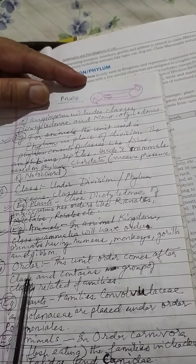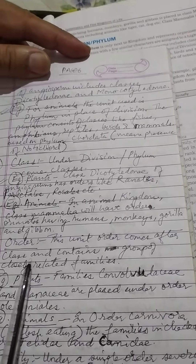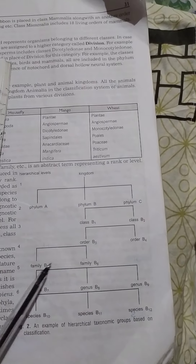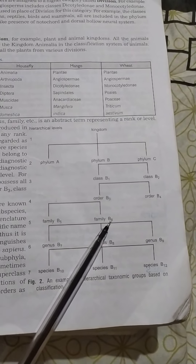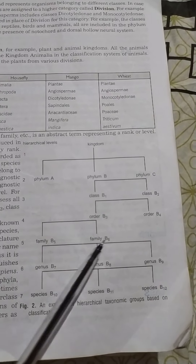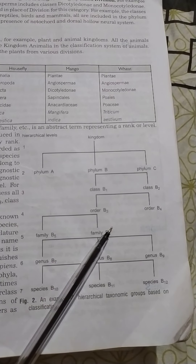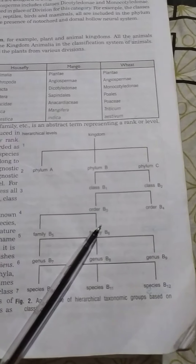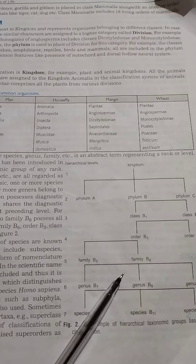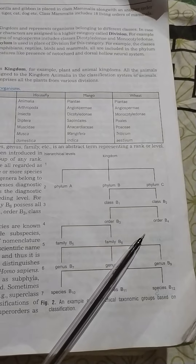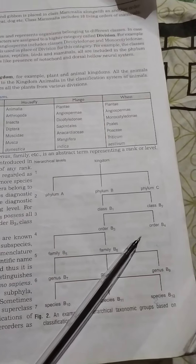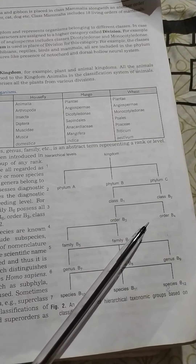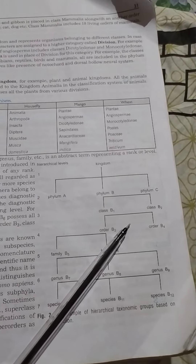After class comes the unit order, which contains groups of closely related families. In plants, families Convolvulaceae and Solanaceae are placed under order Polemoniales. In animals, order Carnivora — meaning those which eat flesh — includes the families Felidae and Canidae.